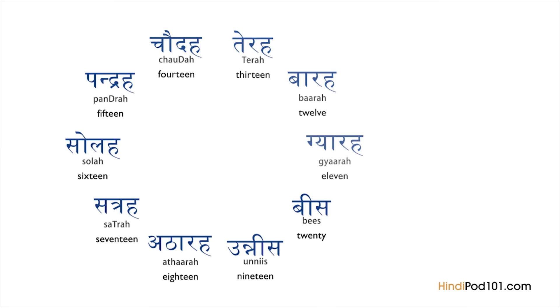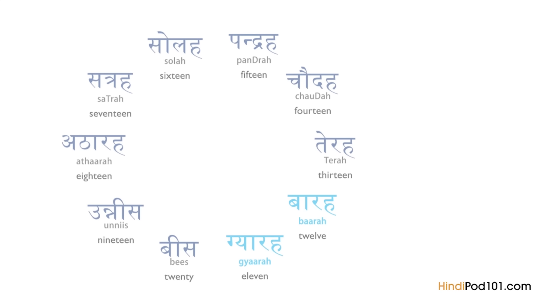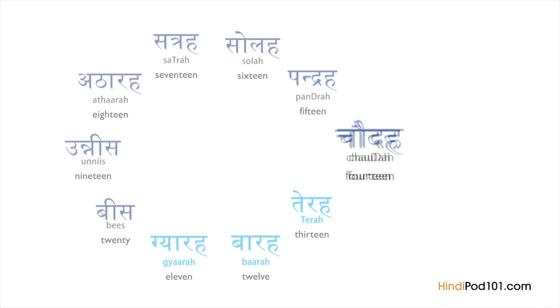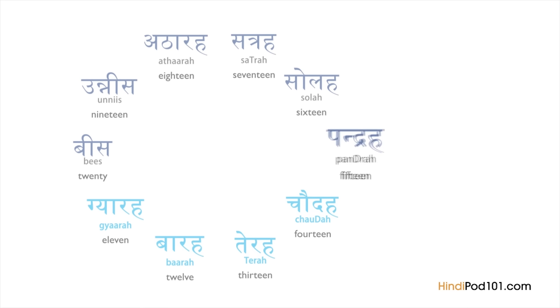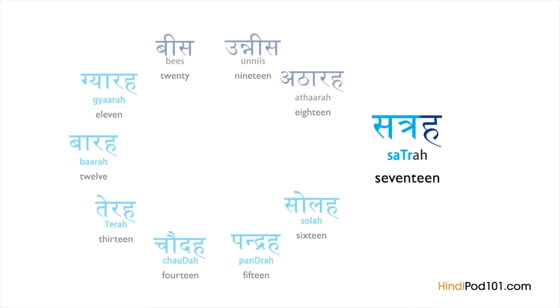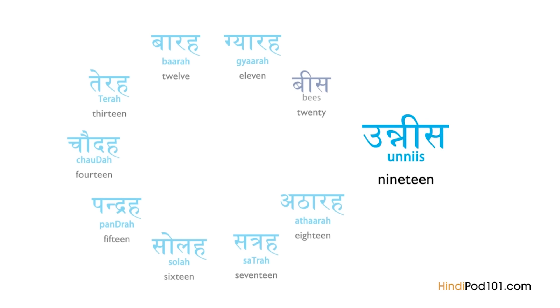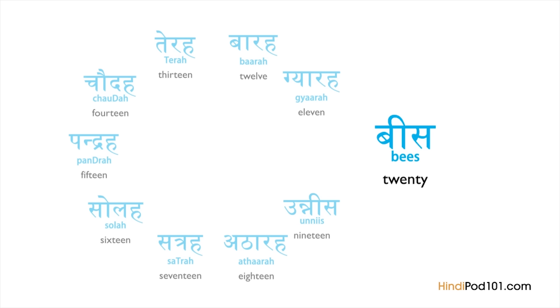Now repeat after me — I'll say the numbers and give you time to repeat each one. Hindi numbers from 1 to 100 are quite irregular with no definite pattern, so the only way to learn them is to memorize them. It might seem daunting at first, but you'll soon recognize a rough pattern.